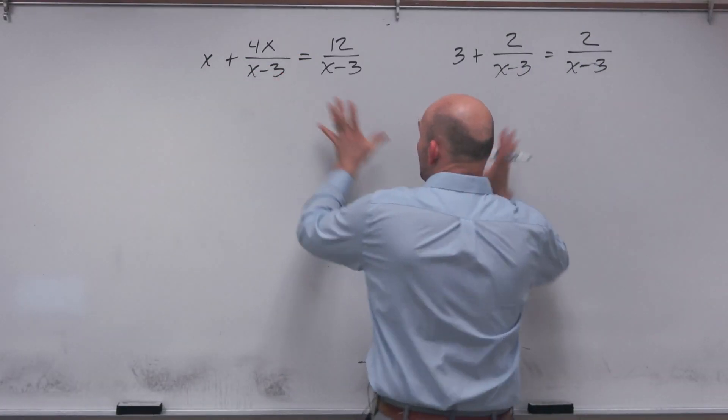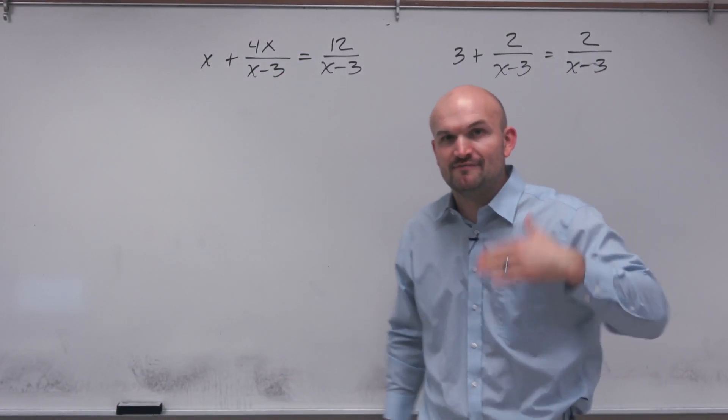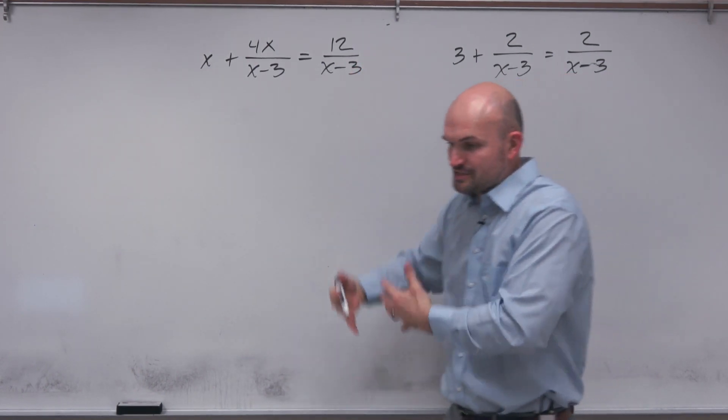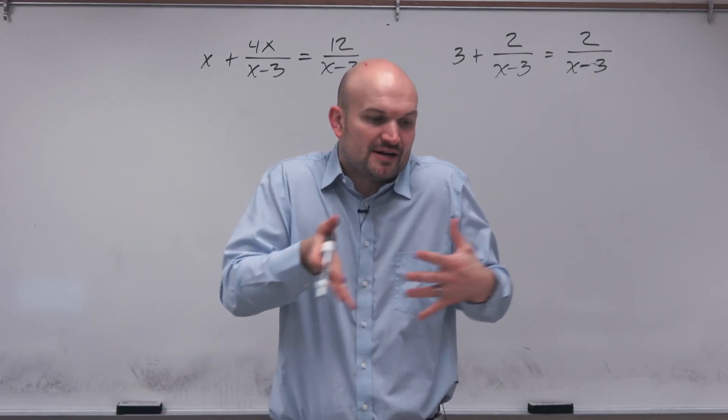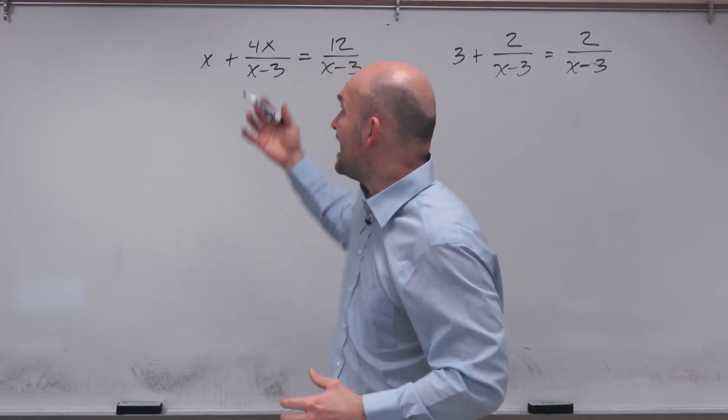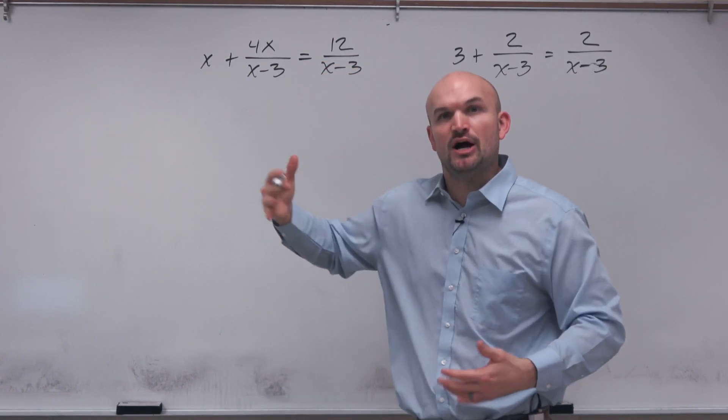So what I have up here is I have two rational expressions and we're going to go ahead and follow some steps on solving rational equations. Now when we want to solve a rational equation we want to get the variable off the denominator. From the very beginning of learning how to solve equations we know that to solve for x or whatever your variable is it has to be off the denominator.